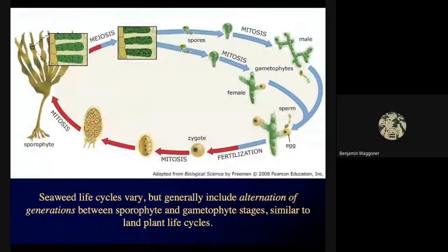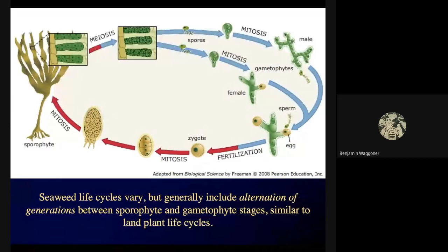Seaweed life cycles vary a lot, but they generally include an alternation of generations. A large visible stage called a sporophyte produces spores. The spores grow into very small gametophytes, and the gametophyte is what produces sperm and egg. Those fertilize to form zygotes, and the zygotes develop into new sporophytes — the circle of life.